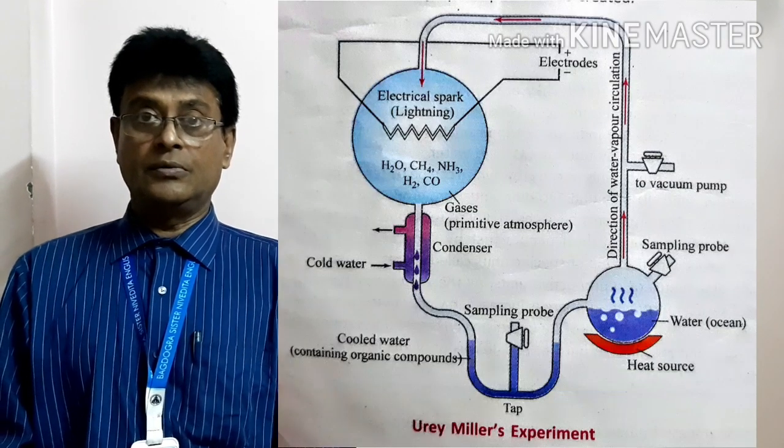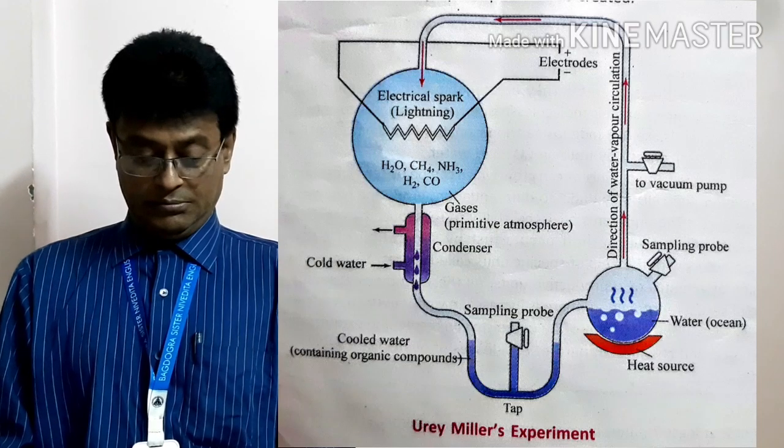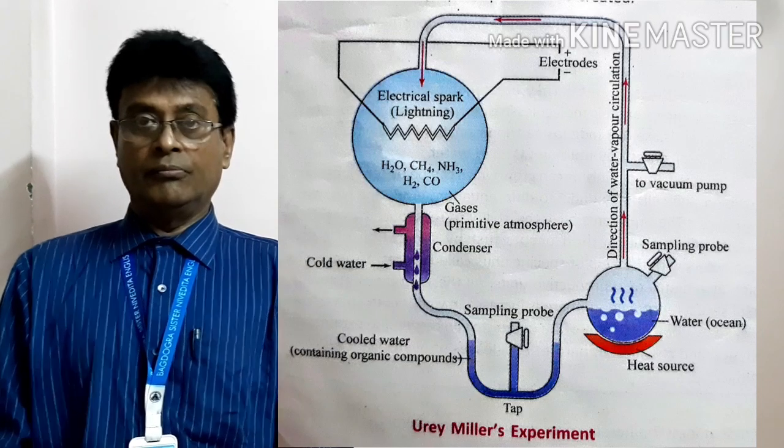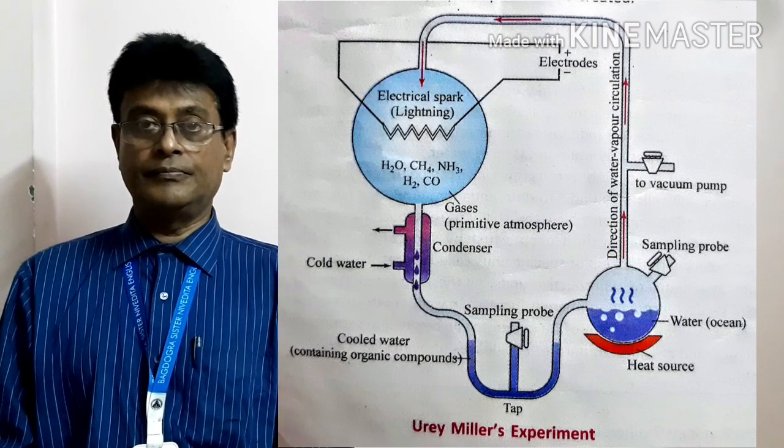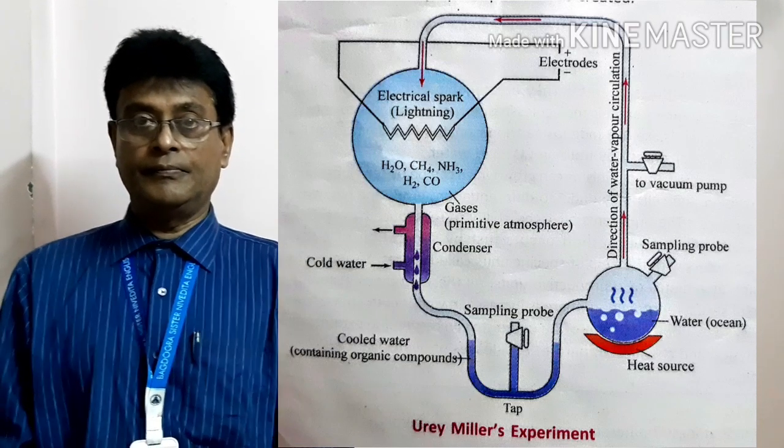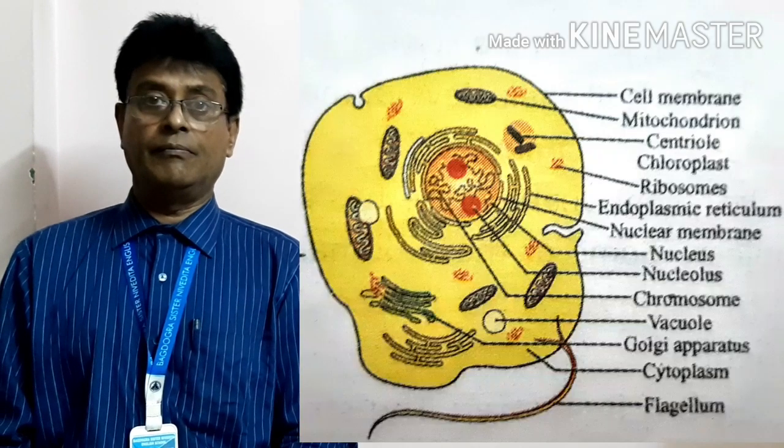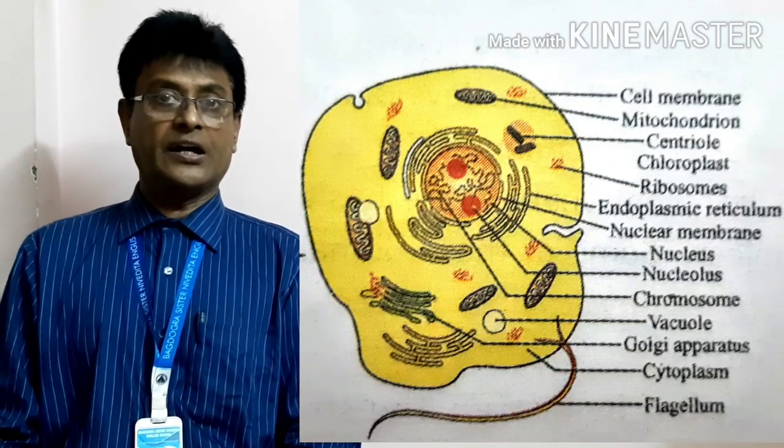Question number 4. Draw and label Ivory Miller's experiment. Here is the diagram. Question number 5. Draw and label the protocell. Here is the diagram.